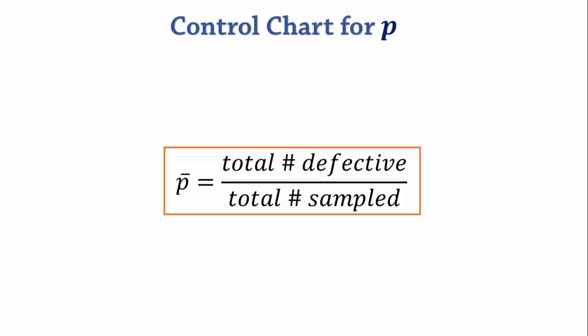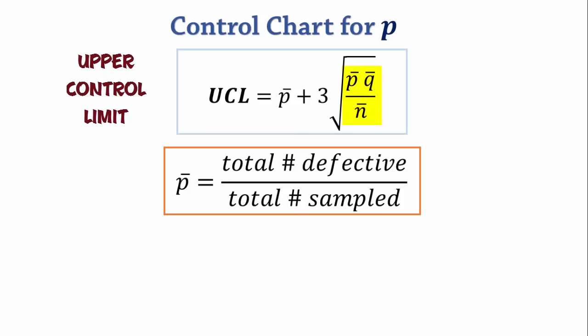The upper control limit UCL is p-bar plus 3 times square root of p-bar times q-bar divided by n-bar. The lower control limit LCL is similar with a minus sign.